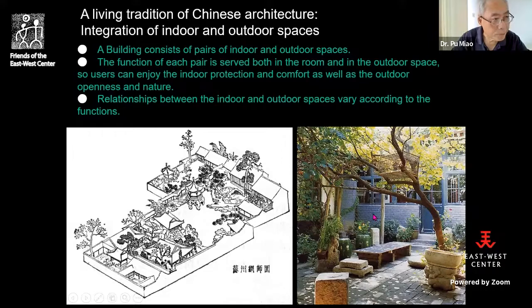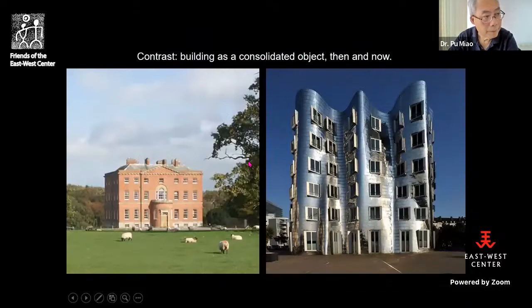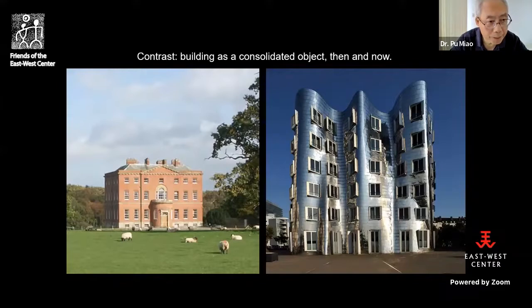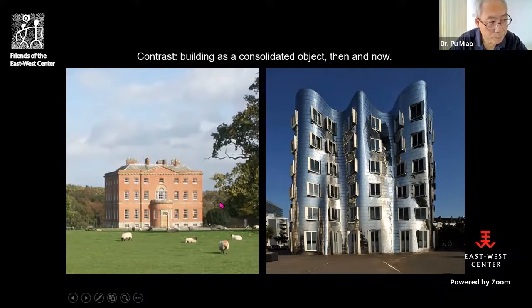The relationship between indoor and outdoor space varies according to functions. In contrast, in the European tradition — for example a French chateau or a British country house — all indoor space is consolidated into a big chunk of solid elements, like a castle. All green space is separated outside, and the building elevation has very little opening, emphasizing separation rather than communication between indoor and outdoor.